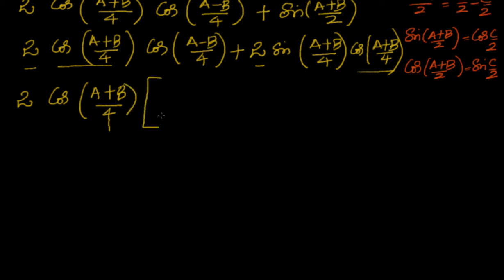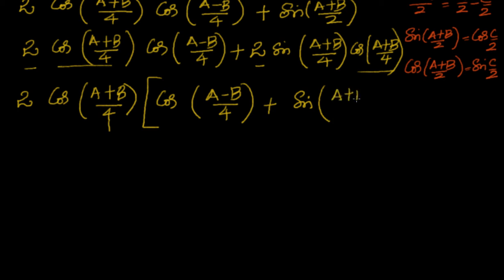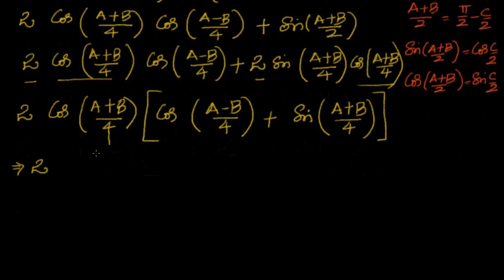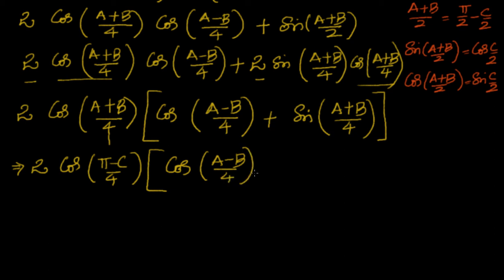We cannot directly apply a transformation mixing cos and sin, so we convert sin to cos. Also, since a + b = π − c, we substitute: cos((a+b)/4) becomes cos((π−c)/4). And sin((a+b)/4) can be written as cos(π/2 − (a+b)/4).